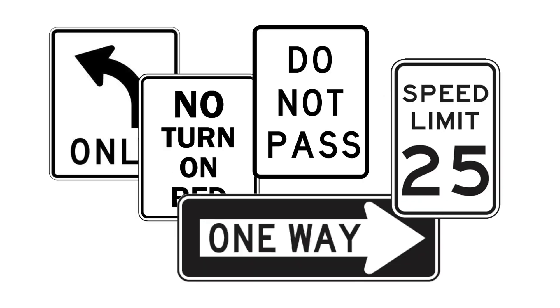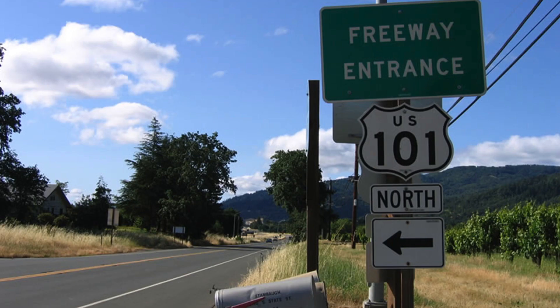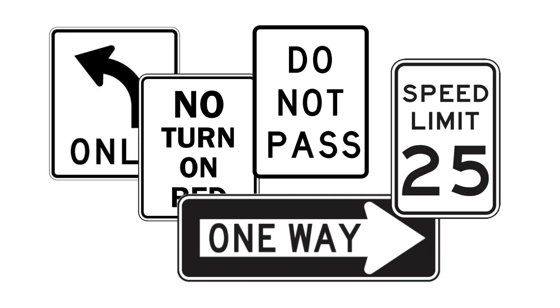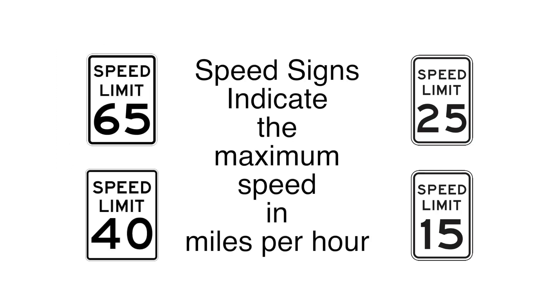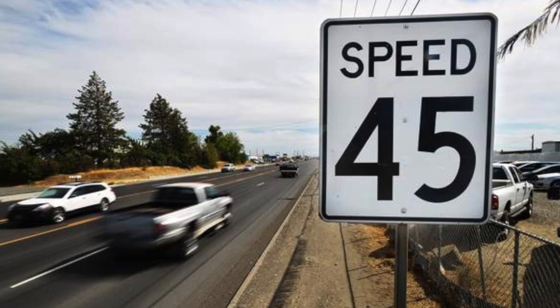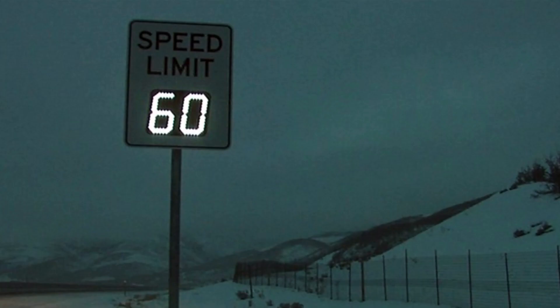Regulatory signs: Other regulatory signs are rectangular with black words or symbols on a white background and tell you what to do. They may be posted alone, with other traffic signs, or with traffic signals. Not all regulatory signs are shown here. Speed signs indicate the maximum speed in miles per hour. The speed begins at this sign and ends where a different speed is posted. Signs may be electronic and may change based on current conditions.